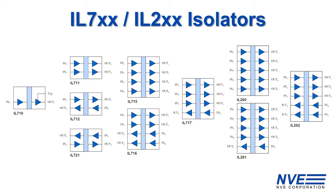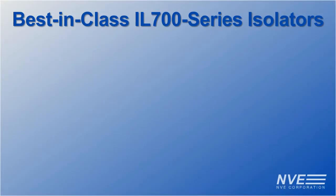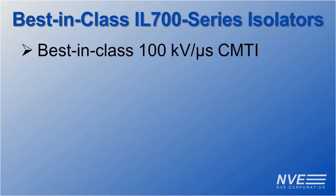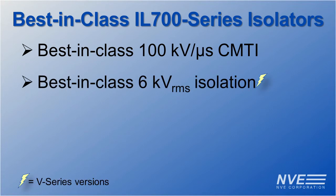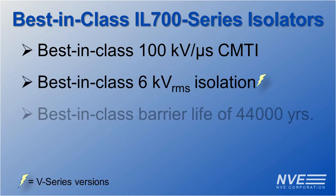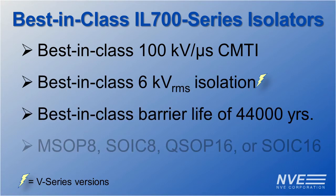NVE offers a full line of channel configurations in the IL-700 and IL-200 isolator product family. All with best-in-class features, including best-in-class common-mode transient immunity, best-in-class isolation voltage, best-in-class barrier life, and the smallest packages in the industry.